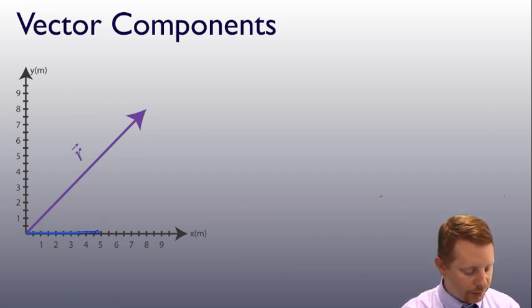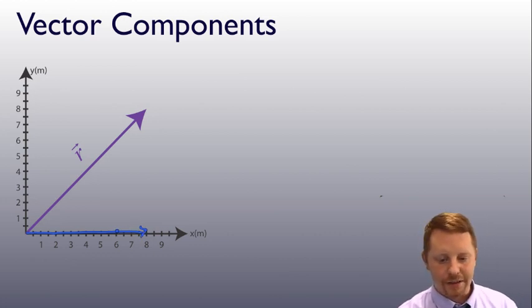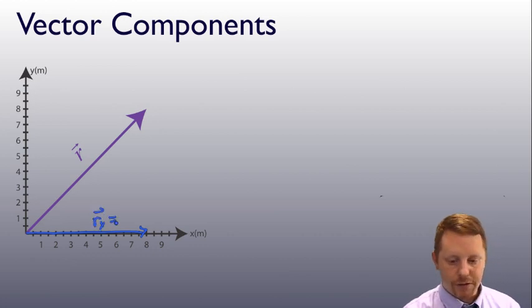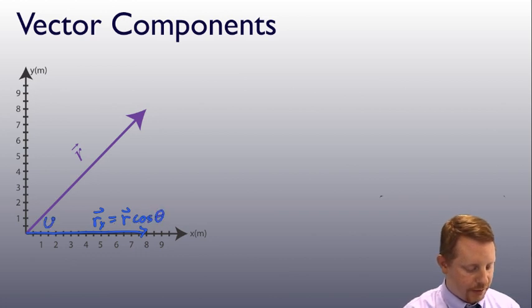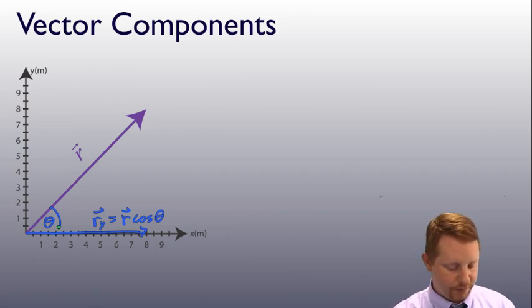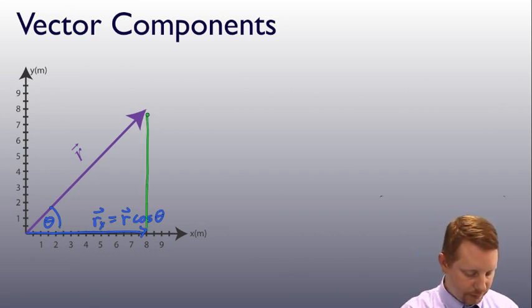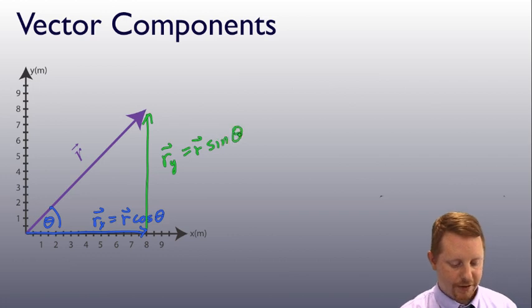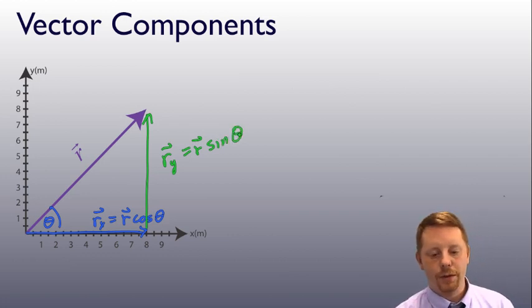All we'd have to do to get the x component is take a look, and the component along the x axis is just going to be rx, which is going to be the magnitude of r times the cosine of angle theta. In this case, that will be our angle theta. Or the y component of r is just going to be r sine theta. And you can go from components back into vectors and angles as well.